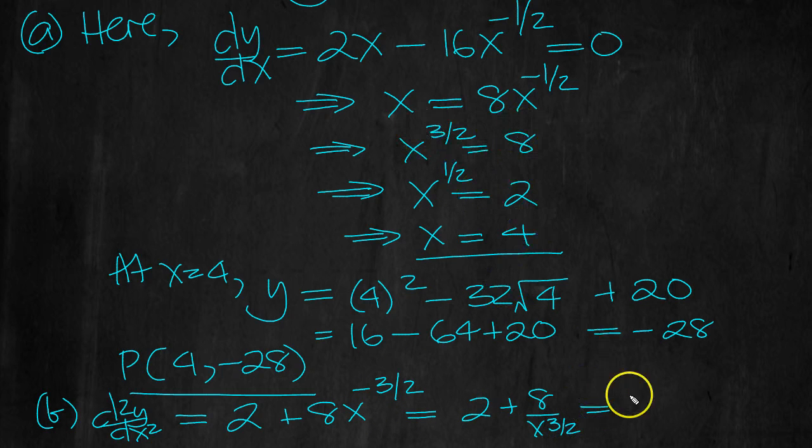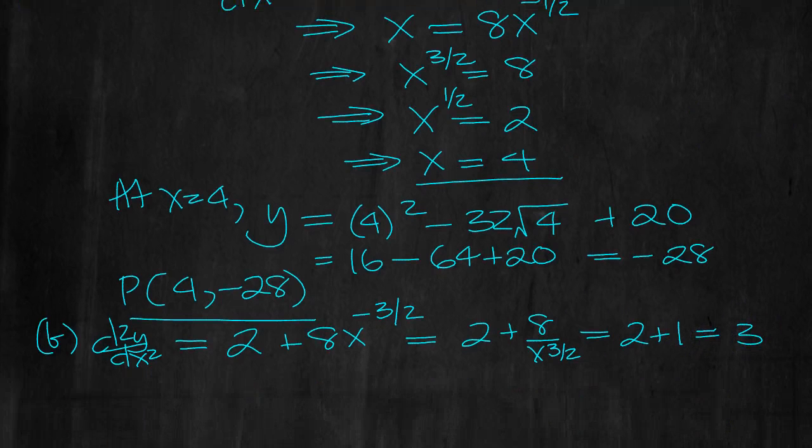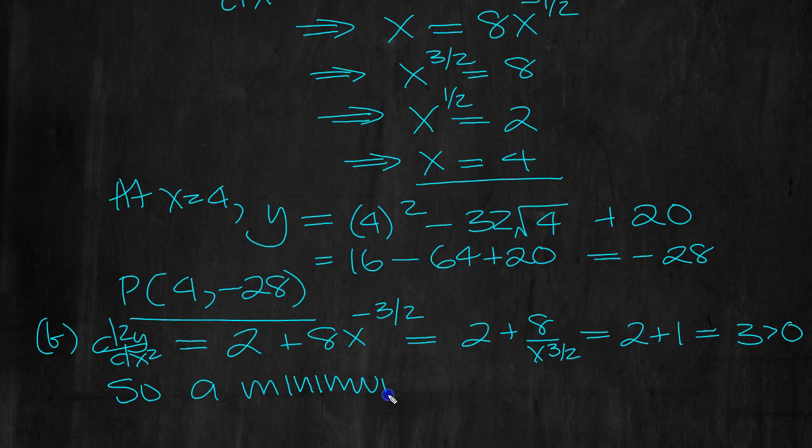Well, x to the minus 3 over 2 is 2 plus 8 over x to the 3 over 2. And before, x to the 3 over 2 was 8, so it's 2 plus 1, which is 3, which is positive, which is greater than 0. So a minimum at x equals 4.